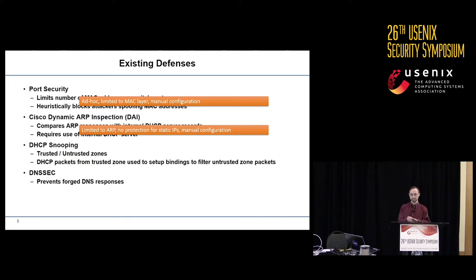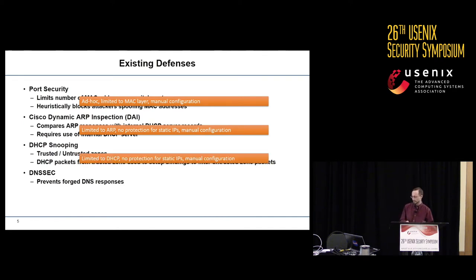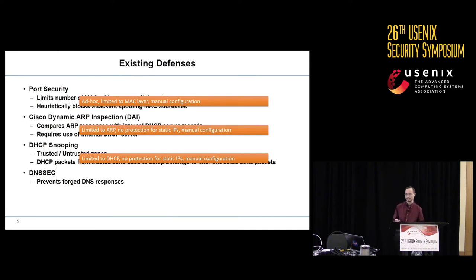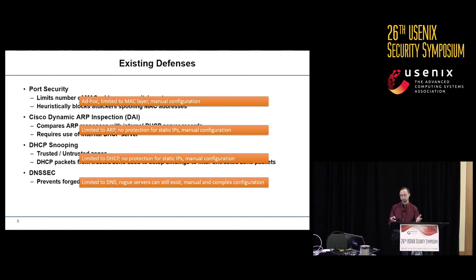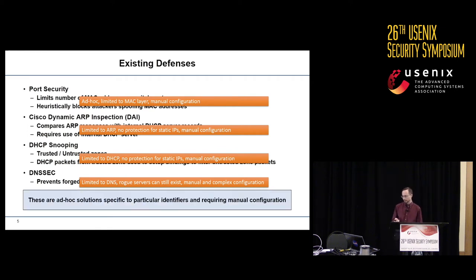Similarly, DHCP snooping splits the ports on your switch into trusted and untrusted zones and filters untrusted zone packets from trusted DHCP packets. Again, if you don't use DHCP, you have no protection. It's limited to a single layer and has manual configuration. Finally, DNSSEC prevents forged DNS responses, but doesn't prevent rogue servers from existing, is limited only to protecting DNS, and again requires complex configuration. In short, existing defenses are ad hoc solutions to protecting specific identifiers and require manual configuration.